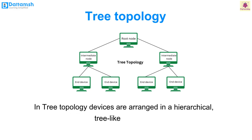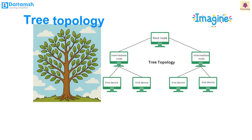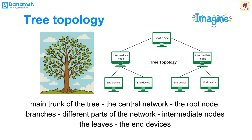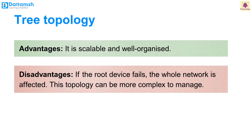Tree topology. In tree topology, devices are arranged in a hierarchical, tree-like structure. Imagine a tree with a trunk, branches, and leaves. The main trunk represents the central network called the root node (usually a powerful computer or server), while branches represent different parts of the network called intermediate nodes connecting the end devices — the leaves — which are computers, printers, etc. Advantages: it is scalable and well organized. Disadvantages: if the root device fails, the whole network is affected; this topology can be more complex to manage.